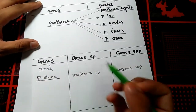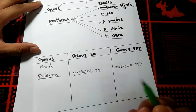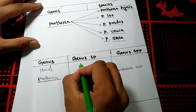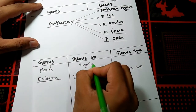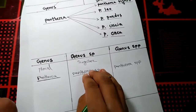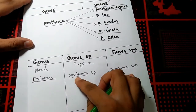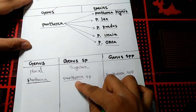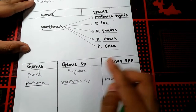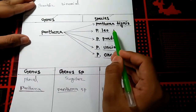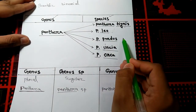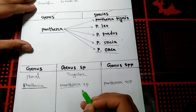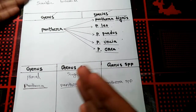The next one: if we find 'Panthera sp.' — remember this is singular. 'Panthera sp.' means this is referring to any one species of this genus. So it refers to either Panthera tigris, or Panthera leo, or Panthera pardus, or Panthera uncia, or Panthera onca — just one unspecified species of the genus Panthera.